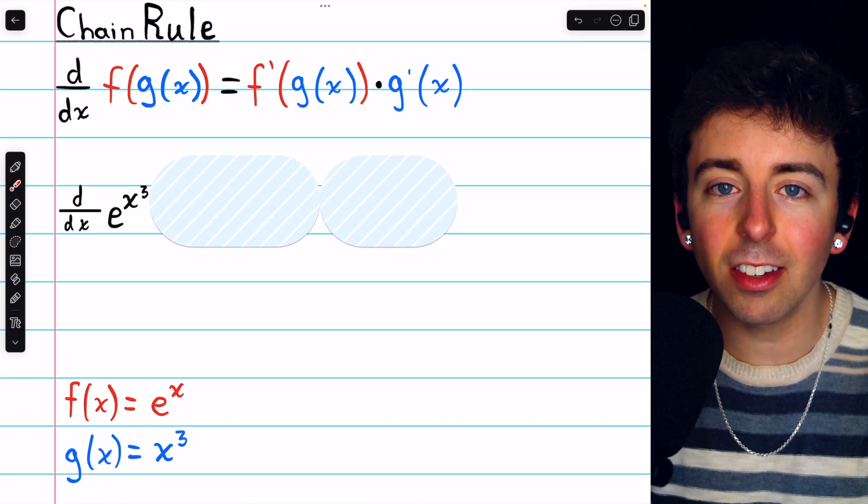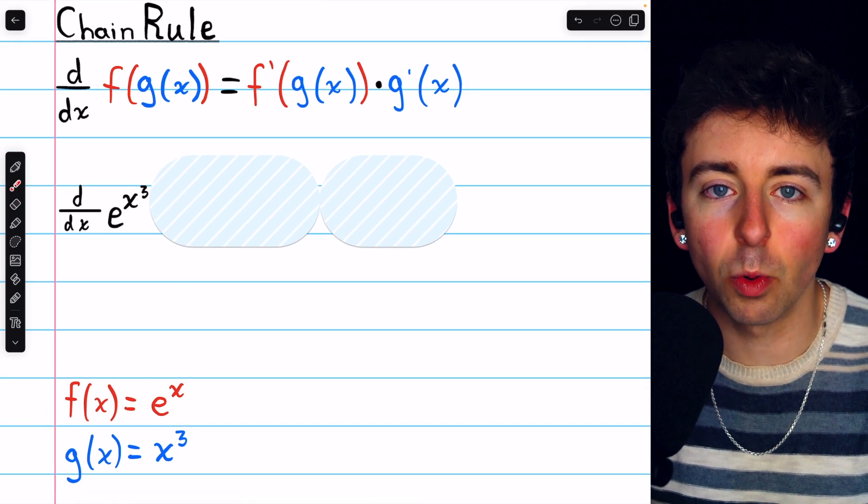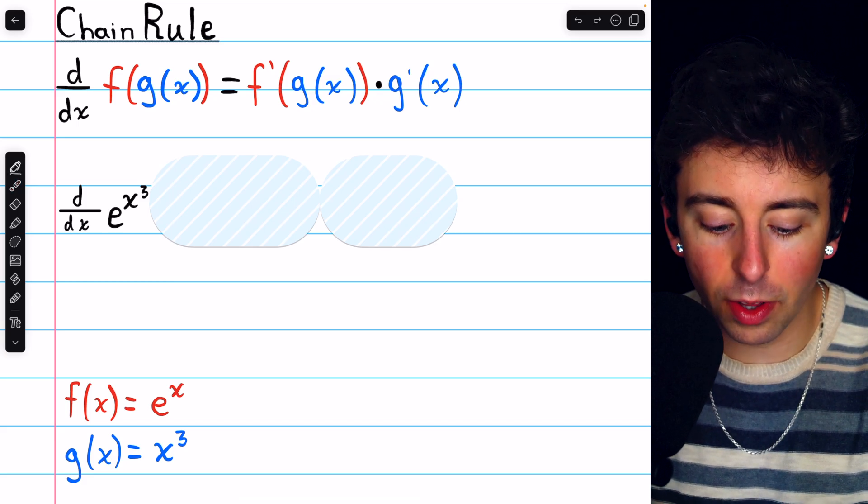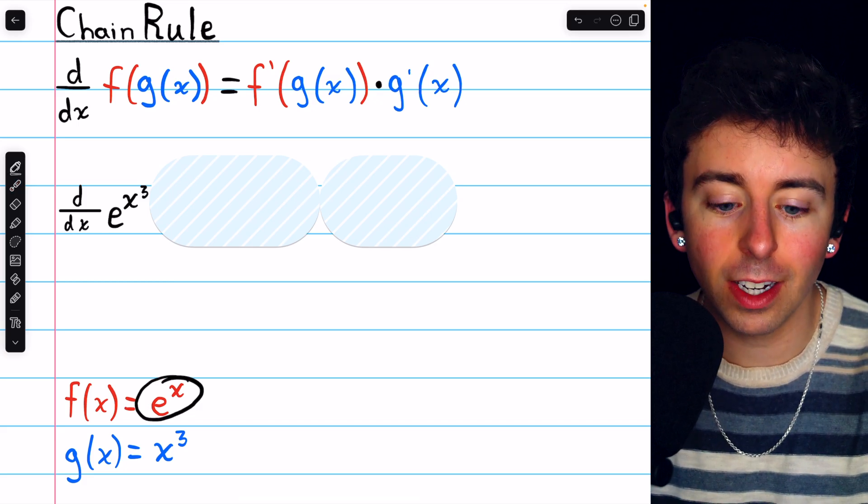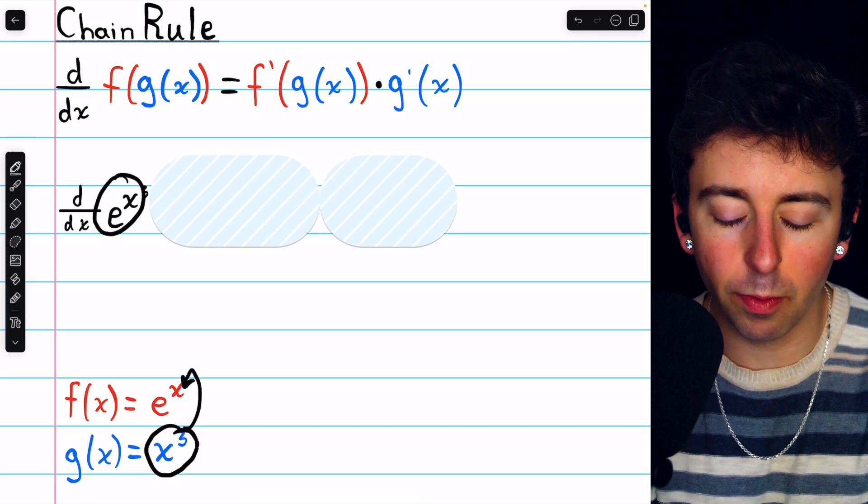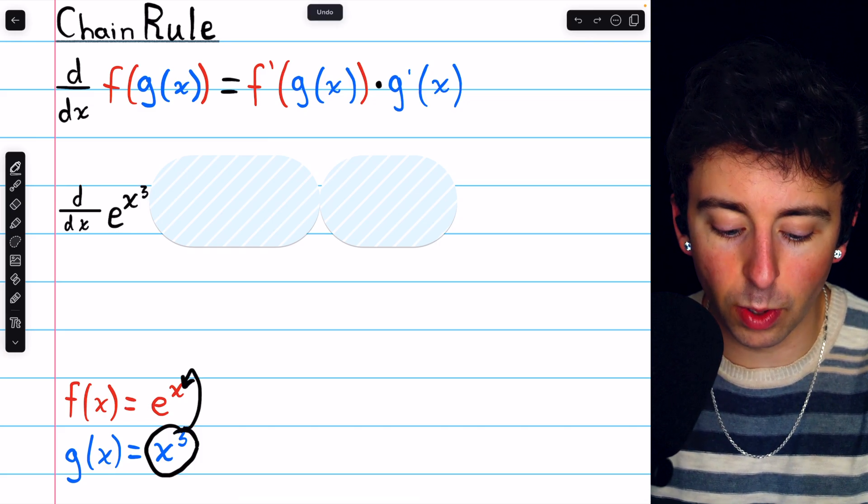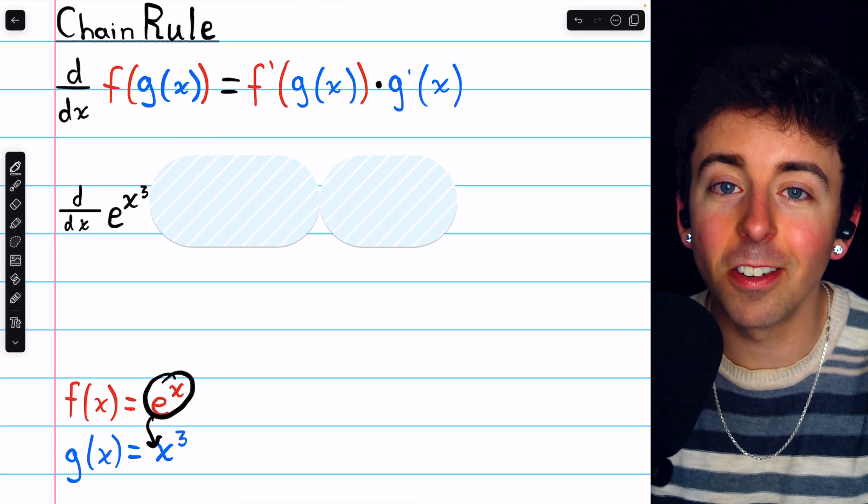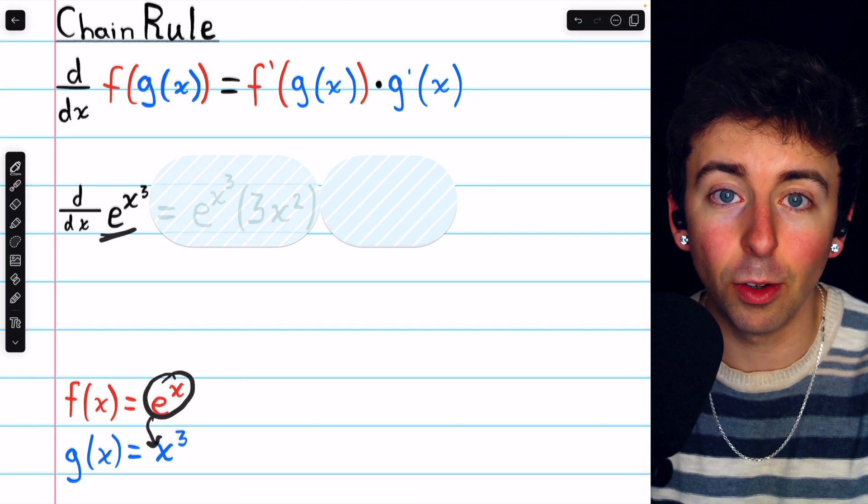So here that is written out, let's go ahead and apply the chain rule to take the derivative. And real quick, how we know that e to the x is the outside function is that we can plug this in here to get our function e to the x cubed. If we do it the other way, plugging this into this, you're not going to get e to the x cubed.